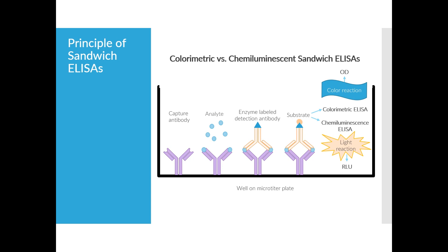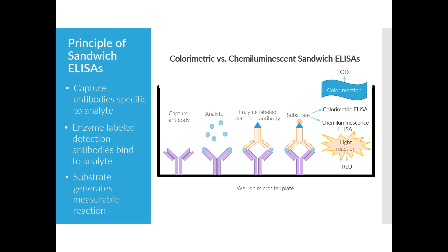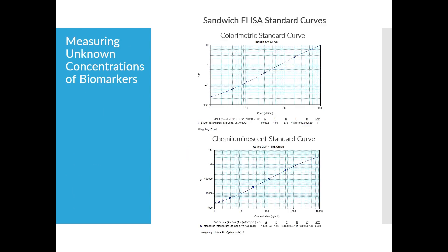Sandwich ELISAs have an antibody coated on the plate which specifically binds to the desired analyte. Following a washing step, a detection antibody and enzyme label are added which bind to the analyte. A substrate is added to generate a reaction in the wells. Depending on the type of assay, either color or light is produced. This reaction can be measured by a plate reader. The degree of color change or light emitted indicates the amount of analyte in the sample.